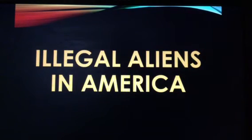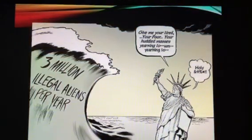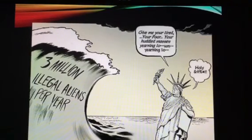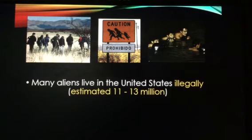On the other hand are the illegal aliens — people who have come to this country illegally, without permission, bypassing the legal process. An estimated 3 million illegal aliens come into our country per year. Many aliens live in the United States illegally, and the total estimate is 11 to 13 million — we really do not know because they are living in hiding. If found out, they would have to be deported, sent back to their original country.